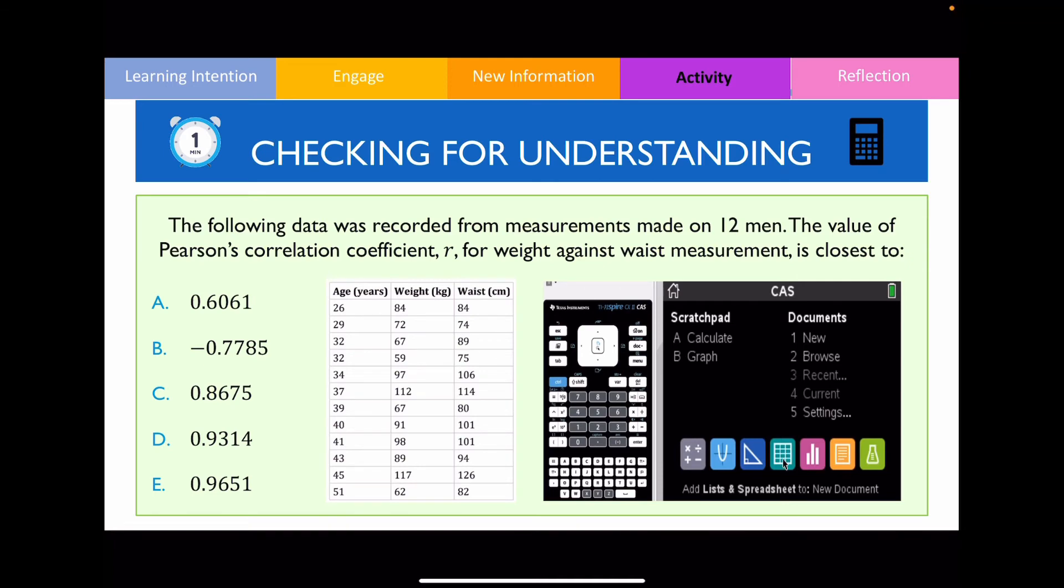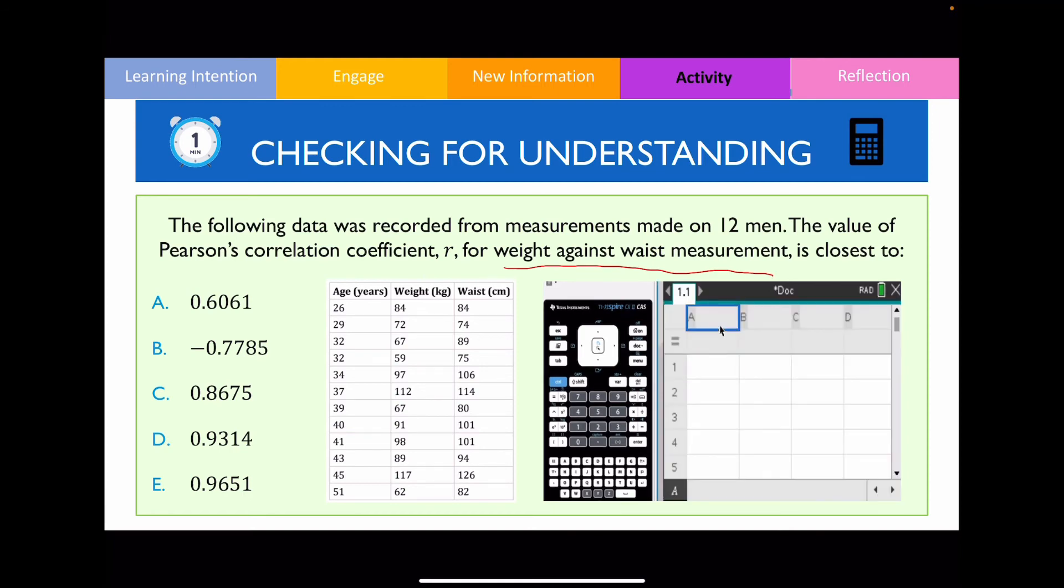In this question, it wants us to find the correlation coefficient for weight against waist measurement. So again, what I'll do is I'm going to enter down all the values for weight and waist. We don't need to input this value at all because we're not interested in that particular variable.